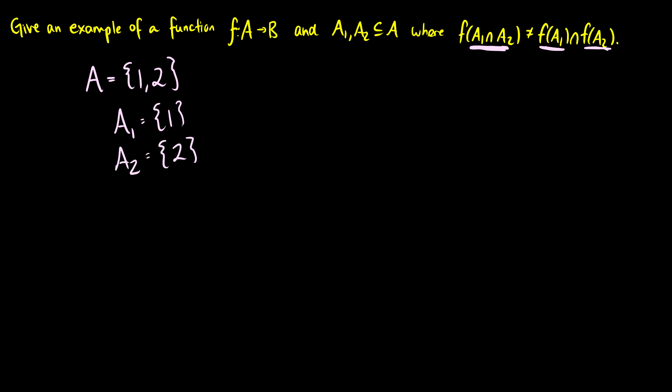So the nice thing about this is that f of the intersection of A1 and A2 is going to be the empty set. So this is f of the empty set. And when we put the empty set into a function, what do we get out? Well, we get the empty set back.